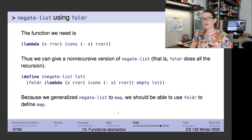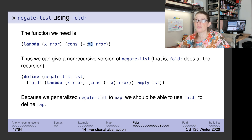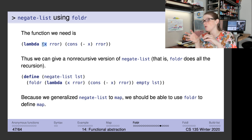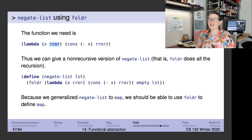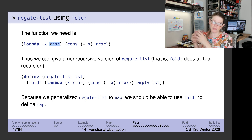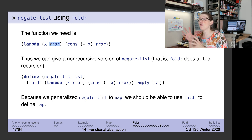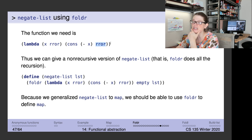We have negate-list, which we'd done before using map, now done using just fold-r. We create a lambda: cons the negated X — argument X is the current element — onto R-R-O-R (result of the rest), which is the second argument and will itself be a list. So we cons the negated first element onto the results of negating the rest of the list. There we go — negate-list implemented with fold-r.